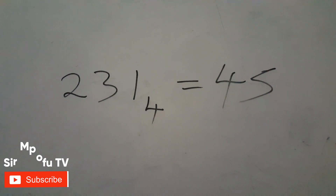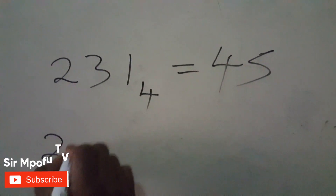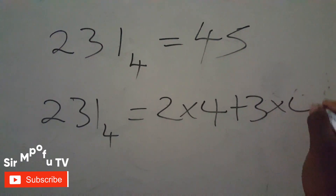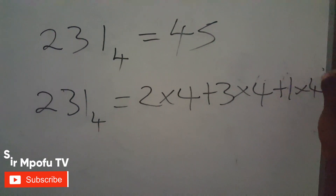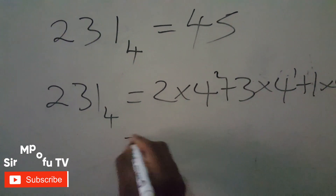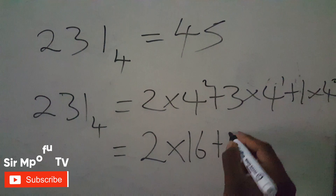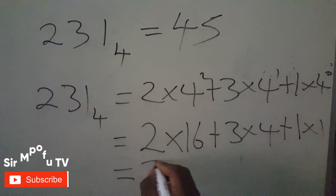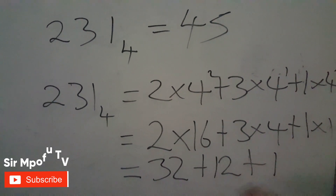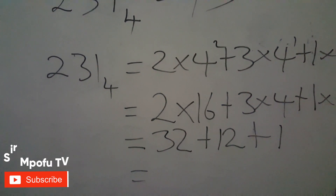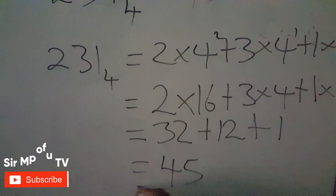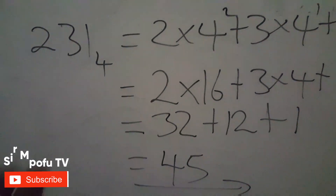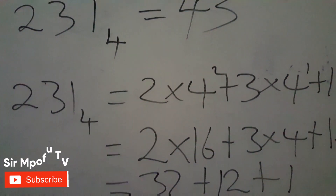Let me prove it with the expansion method: 2314 base 4 equals two times four squared, plus three times four to the power one, plus one times four to the power zero. This equals two times sixteen, plus three times four, plus one times one, which is 32 plus 12 plus 1 equals 45. Proof confirmed. I hope you understand both the shortest and the longest method.